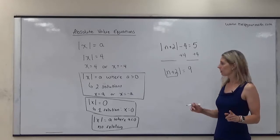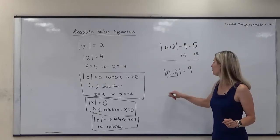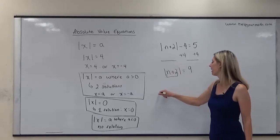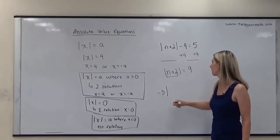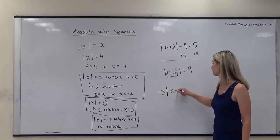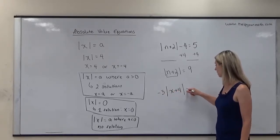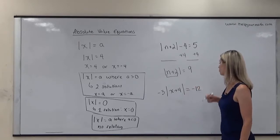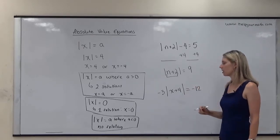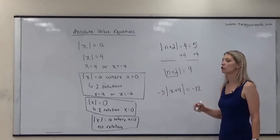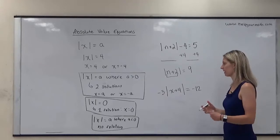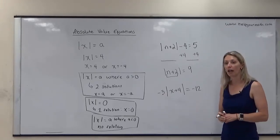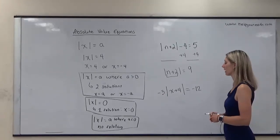One more important note: if something is being multiplied by the absolute value — for example, negative 3 times the absolute value of (x + 4) equals negative 12 — it's crucial that we do not distribute the negative inside the absolute value bars. We do not use the distributive property with absolute value.